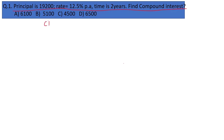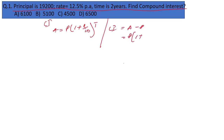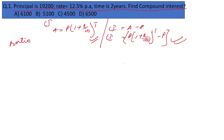For compound interest, the formula is: Amount = P(1 + r/100)^t, and Compound Interest = Amount minus P. But in this video I will not use these formulas. Instead, I will be using the ratio method.